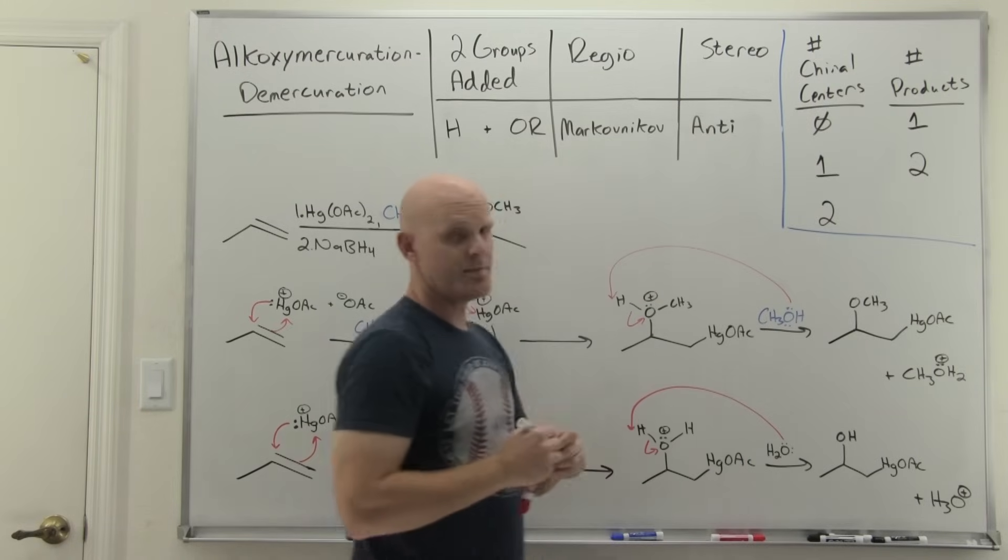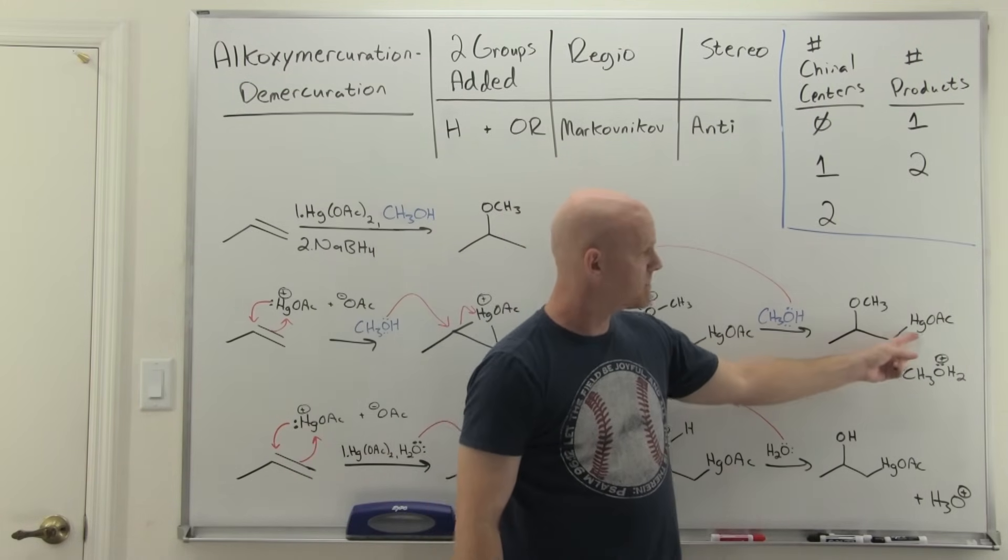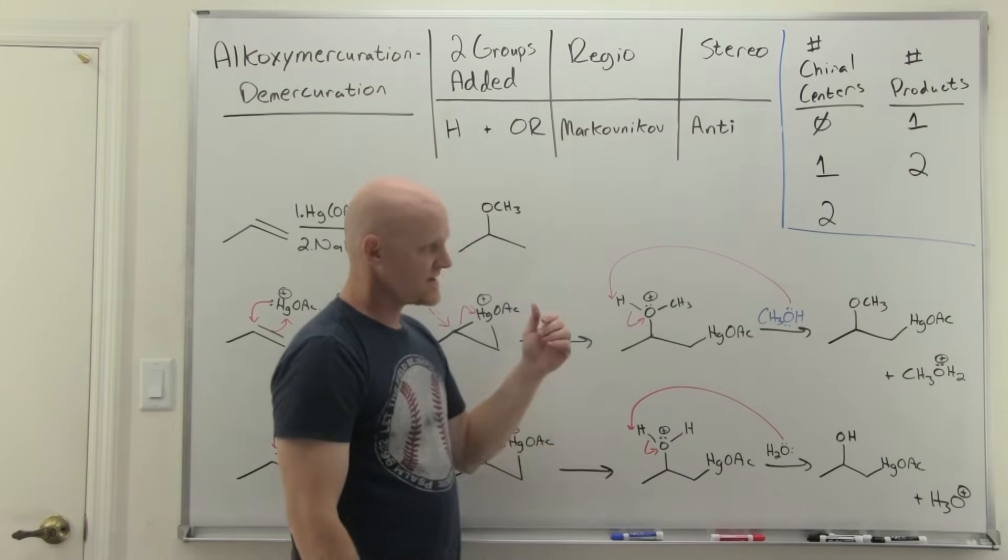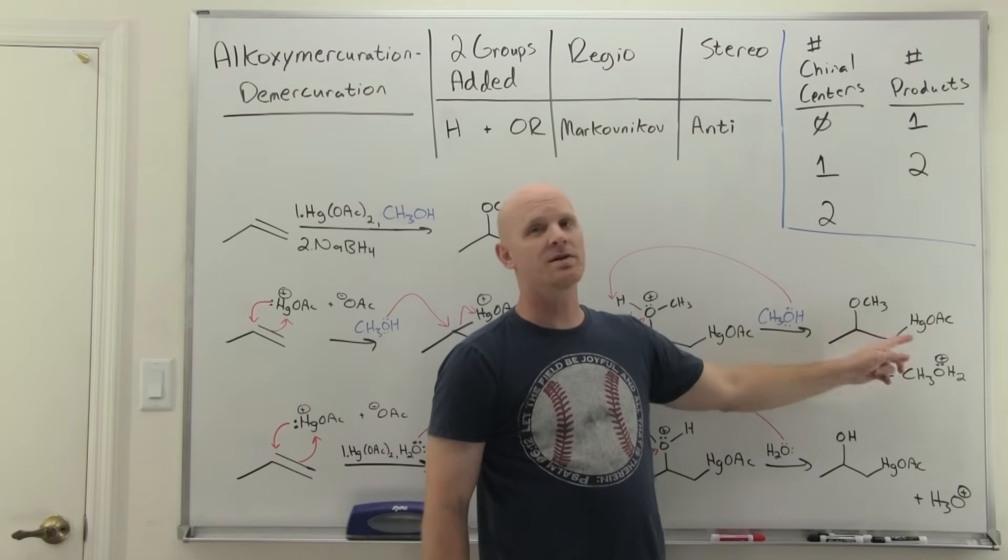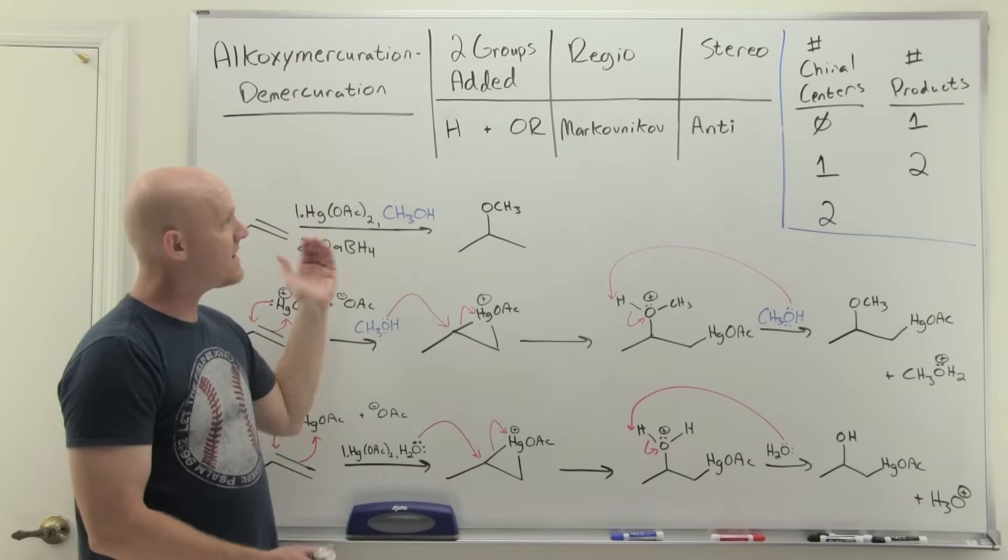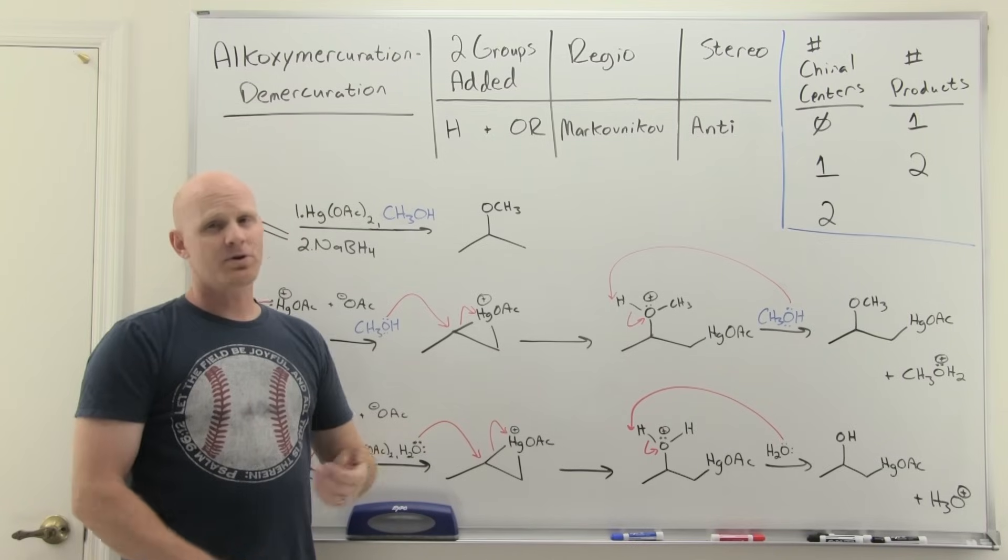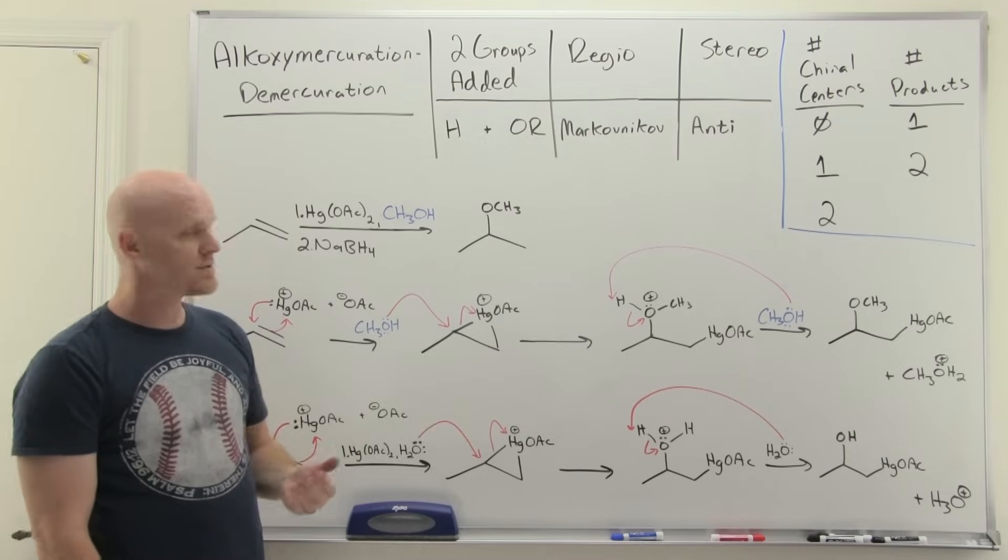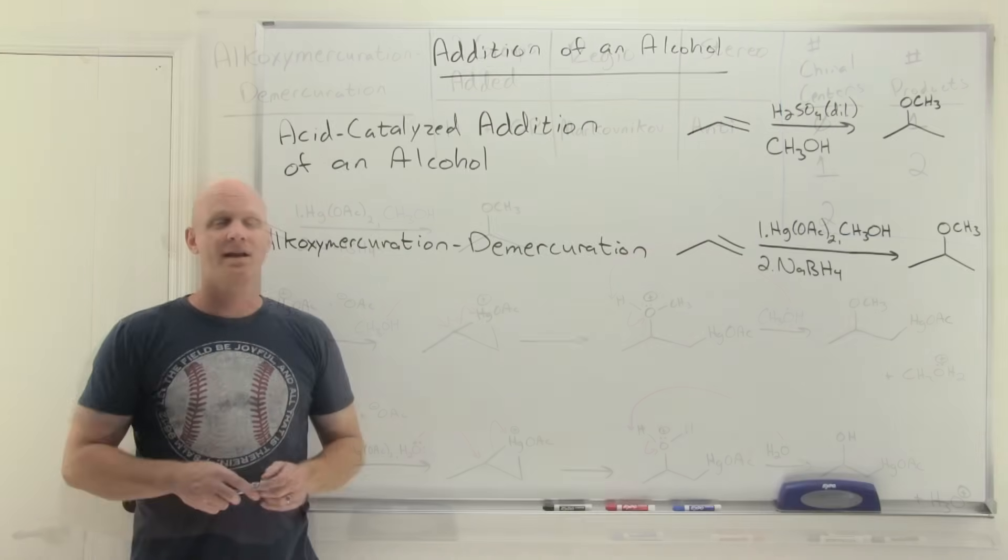All right cool, and that's the end of the mechanism of step one, we've accomplished alkoxymercuration. Cool, and then again second step when we add any BH4 would just be the demercuration and replace the mercury there with a hydrogen, getting us to our final product. That's alkoxymercuration demercuration, again mechanism exactly analogous to oxymercuration, but instead of forming an alcohol for a product we're going to form an ether as a product instead.